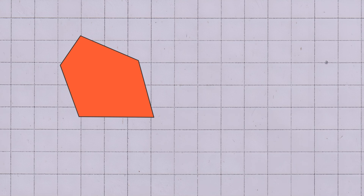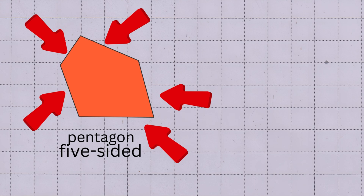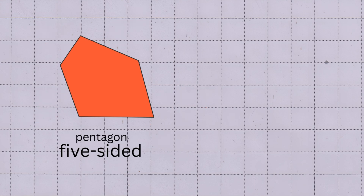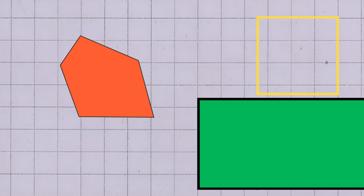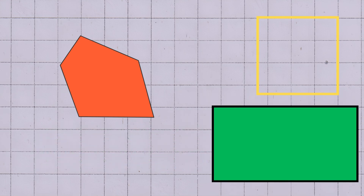Here is another one. An irregular pentagon is a five-sided shape where each side can have a different length. These shapes do not follow specific geometric rules like squares, rectangles, or equilateral triangles.